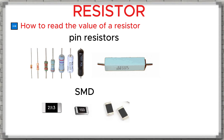For SMD resistors, the value is usually printed as numbers on top of the component. However, for very small SMD resistors, there is no marking at all. In that case, the only way to know the value is to check the manufacturer's datasheet or measure it with a multimeter and compare it with the same component in another device of the same model.